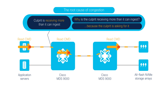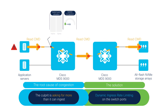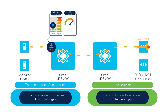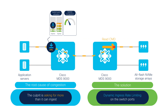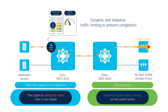In block storage networks, the storage arrays don't send data by themselves — the servers ask for data by initiating an IO. Cisco DIRL feature watches any symptom of egress congestion on the switch ports and then limits the ingress traffic to prevent congestion in the egress direction. By limiting ingress frames, DIRL slows down the read command frames that are requesting data from the all-flash arrays. If the servers ask for less, they will get less and won't cause any congestion. DIRL is adaptive in nature — it dynamically changes ingress rate limiting to match the traffic profile of the applications to keep congestion under control.